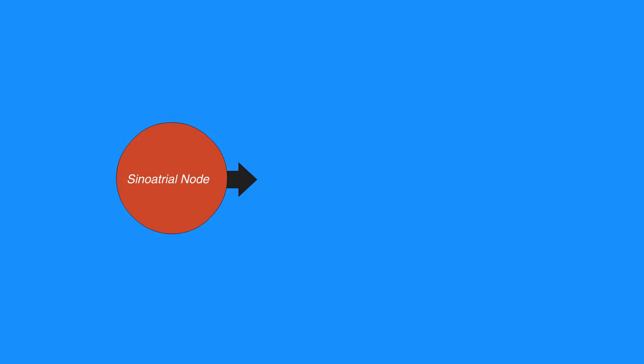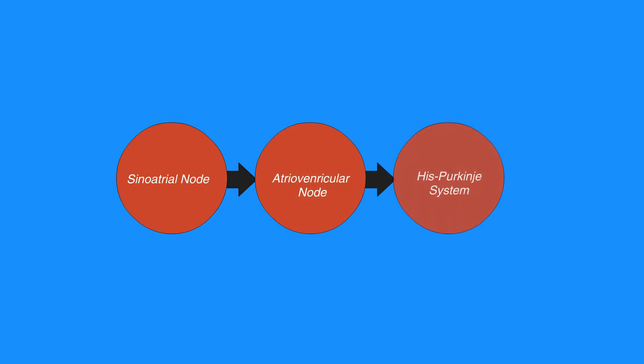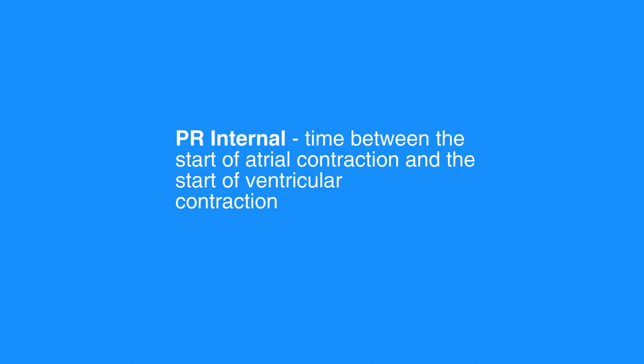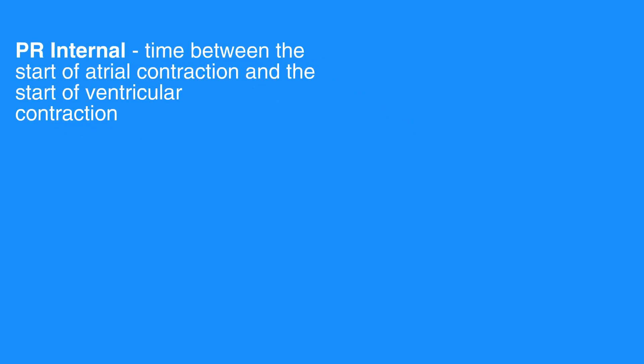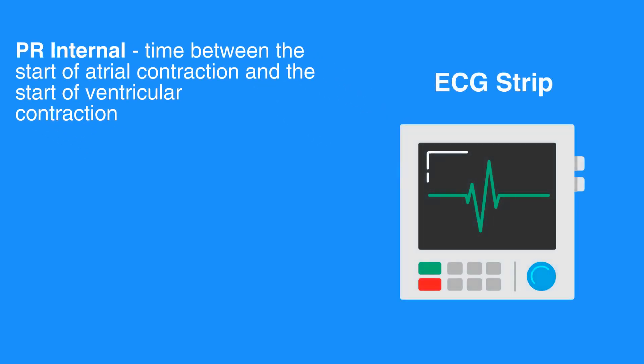This impulse then travels to the AV node, which in turn conducts the electrical impulse through the bundle of His, bundle branches, and the Purkinje fibers of the ventricles, causing ventricular contraction. The time between the start of atrial contraction and the start of ventricular contraction registers as the PR interval on an ECG strip. The ventricular contraction registers as the QRS complex.